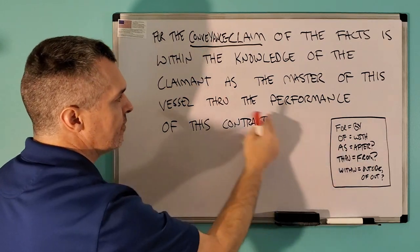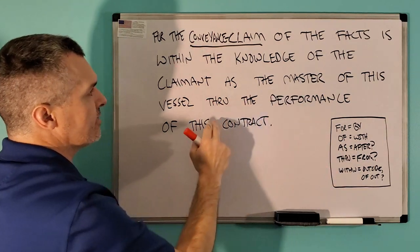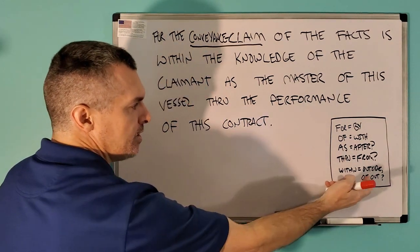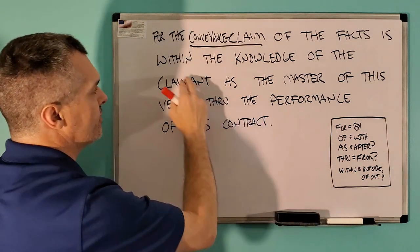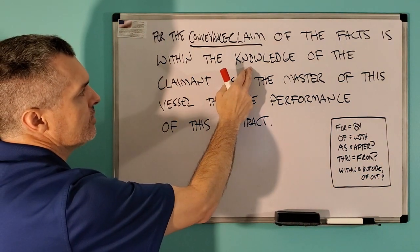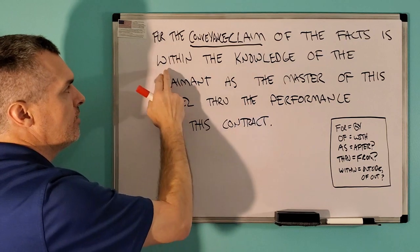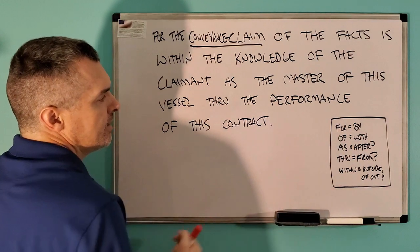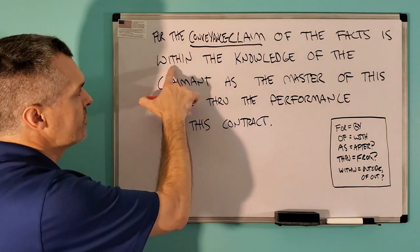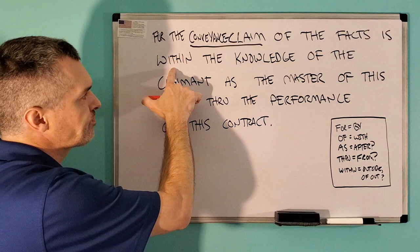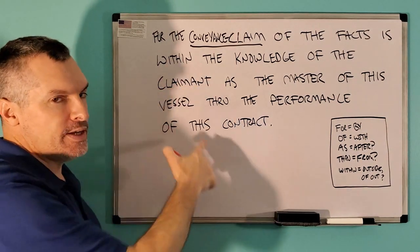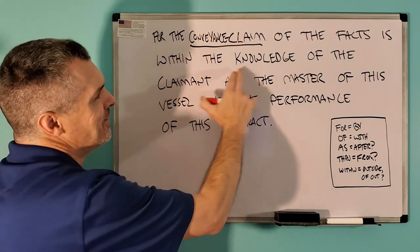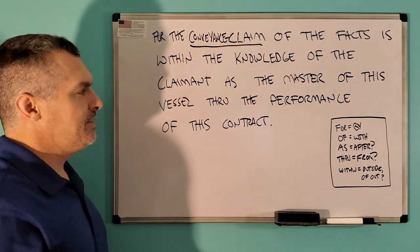So what's congruent with as? After. So, after the master — with the claimant — with, and then we have within. What's congruent with within? Outside and out of. So, we'll say outside the knowledge. Or, if you go with this as an example of guidance, what's congruent with with? Of. So what's congruent with in? Out. So, of out. With the facts, by the conveyance claim.